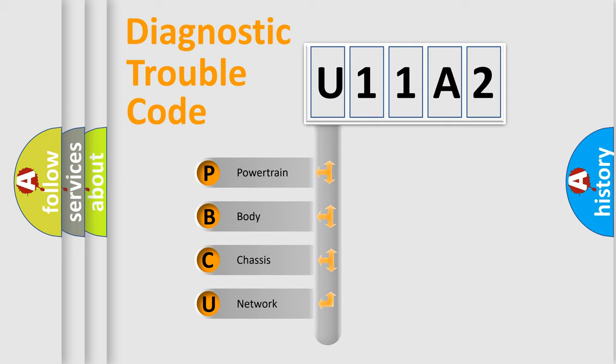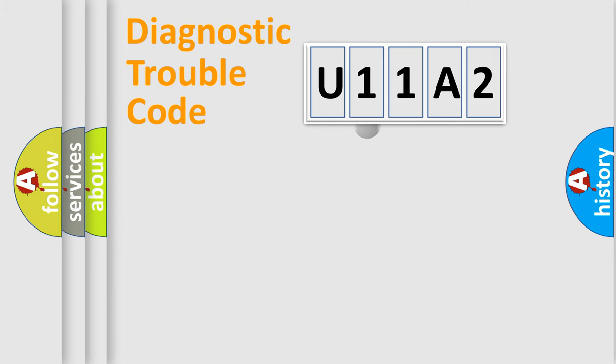We divide the electric system of automobile into four basic units: Powertrain, Body, Chassis, Network. This distribution is defined in the first character code.